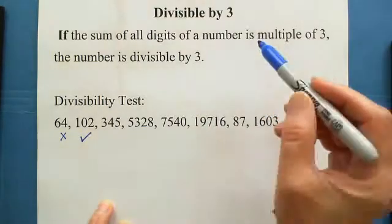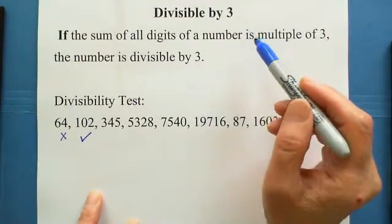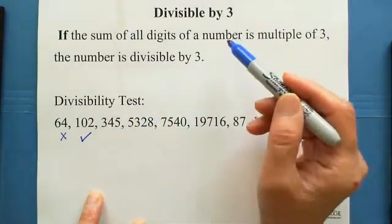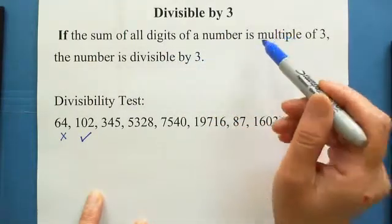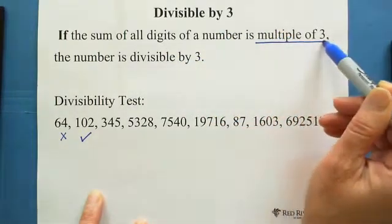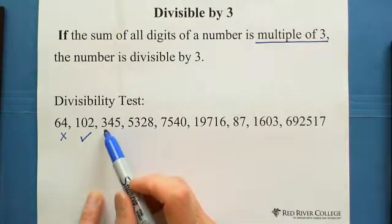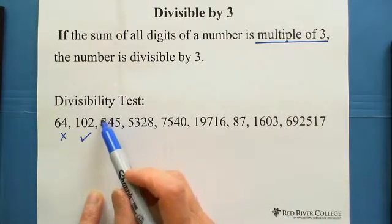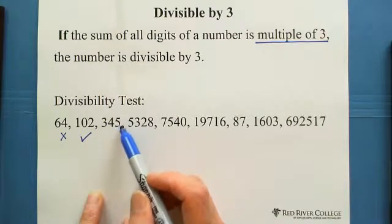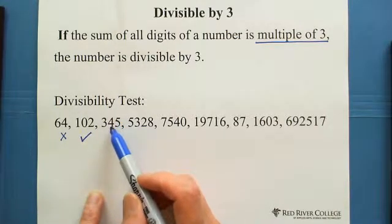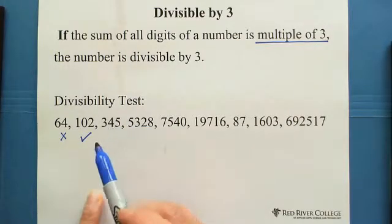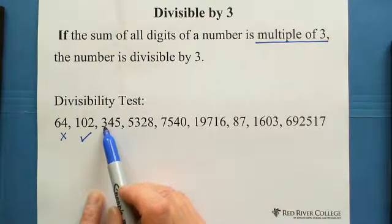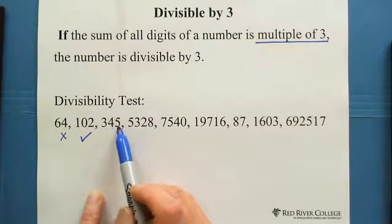To make it a little easier, you don't need to add up all the digits. Just check if the sum of all digits is a multiple of 3. That means 3 is already one multiple of 3, and 4 plus 5 is 9, which is another multiple of 3.